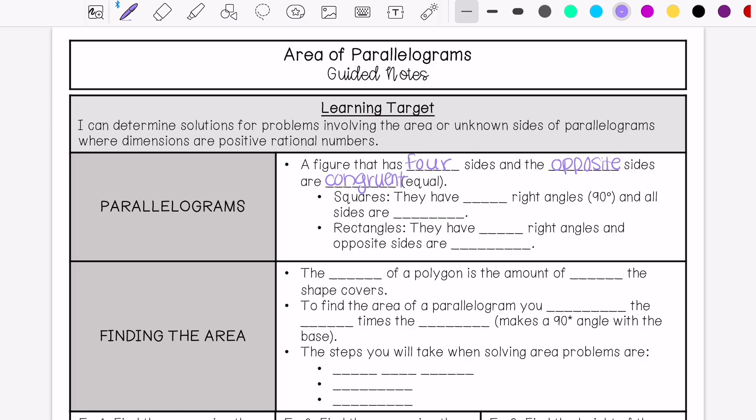Squares have four right angles, that means that their angles are 90 degrees, and all sides are congruent, all sides are equal.